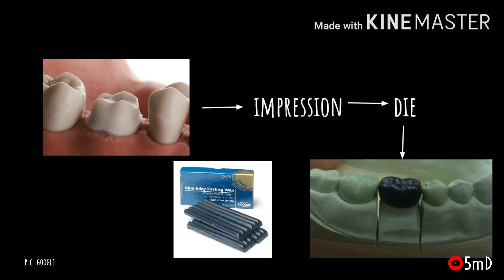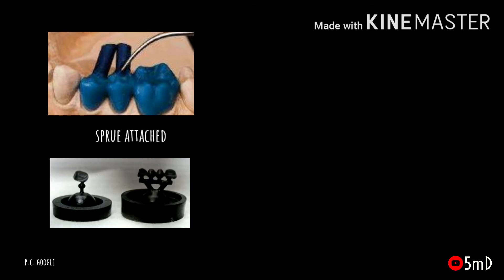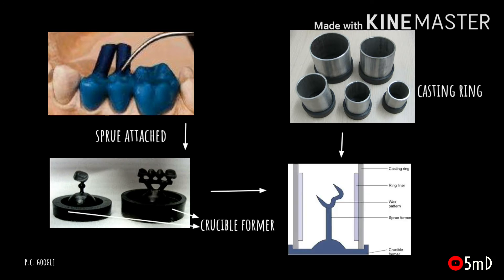This wax pattern is the basis on which the future metal prosthesis will resemble. Sprue wax is attached to the inlay wax pattern, and on the other side the crucible former is attached to the casting ring, on which the inlay wax pattern along with the sprue is made to stand.